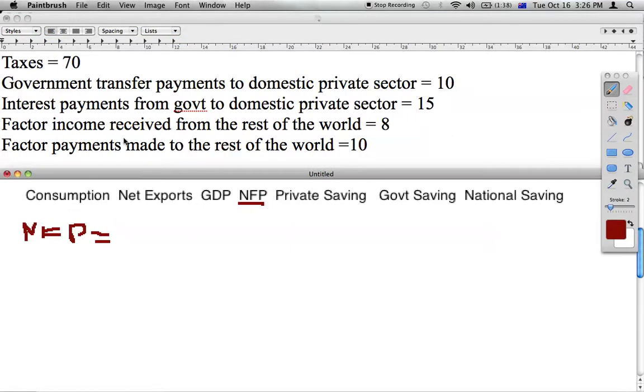So looking at the data again, factor income received from the rest of the world - this is all our businesses out there in the rest of the world that are receiving income. So this will be first, minus our factor payments made to the rest of the world. So the rest of the world, meaning all the foreign companies in New Zealand, all the payments we give them effectively go to their other country. So minus 10 is the total net factor payment of minus 2.